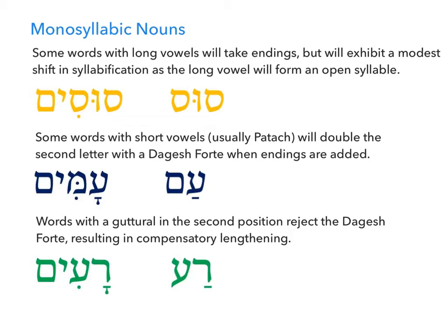The first pattern involves words like sus. Sus — our word for horse — is a CVC form with a long vowel (a shuruk). When inflected for the plural, it becomes susim, with our regular endings added to the noun. The result changes the syllable breakdown from CVC to CV-CVC, but nothing of substance changes. You're still seeing the vocab word sus and our ending -im. Focus on what you already know and that shift in syllable breakdown shouldn't throw you.